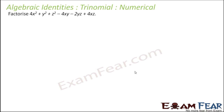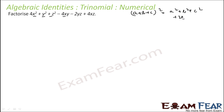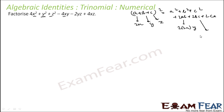Now let's factorize 4x² + y² + z² − 4xy + 4xz − 2yz. This looks like an (x+y+z)² type expression. We know (a+b+c)² = a²+b²+c²+2ab+2bc+2ca. If a=2x, b=y, c=z, then 2ab=4xy, 2bc=2yz, 2ca=4zx. But the signs don't match for the 4xy and 2yz terms. The common mismatched term involves y, so let's try b=−y.